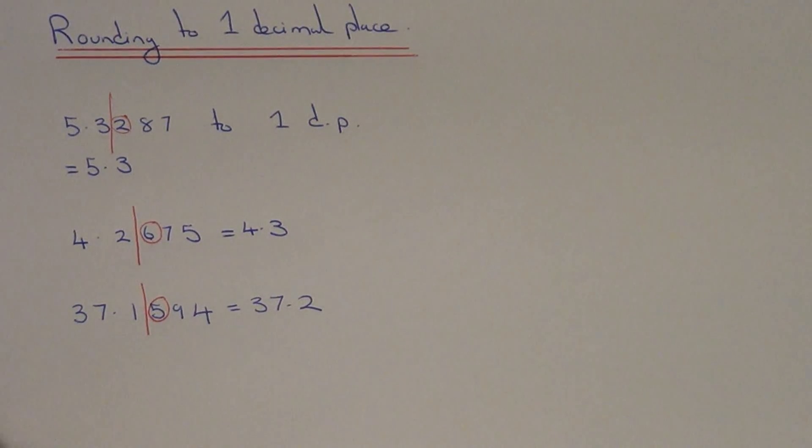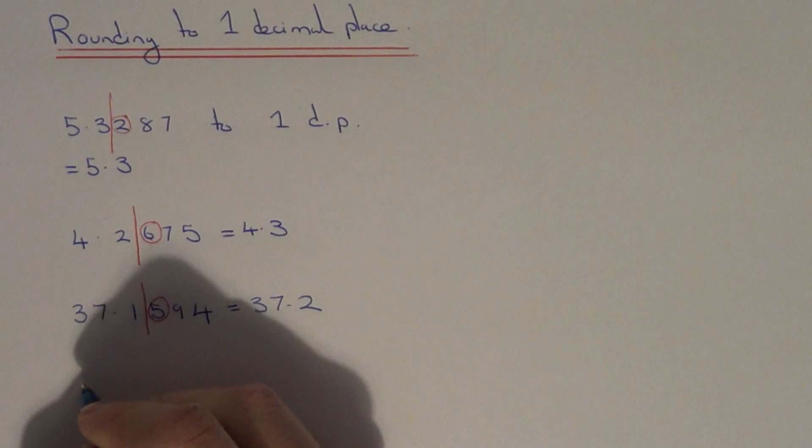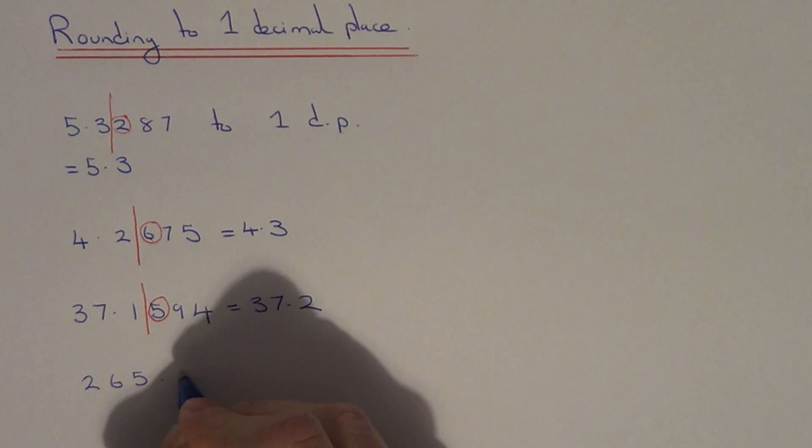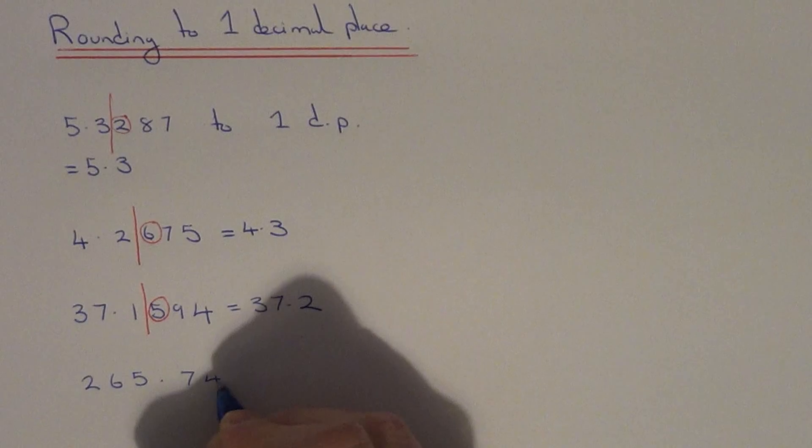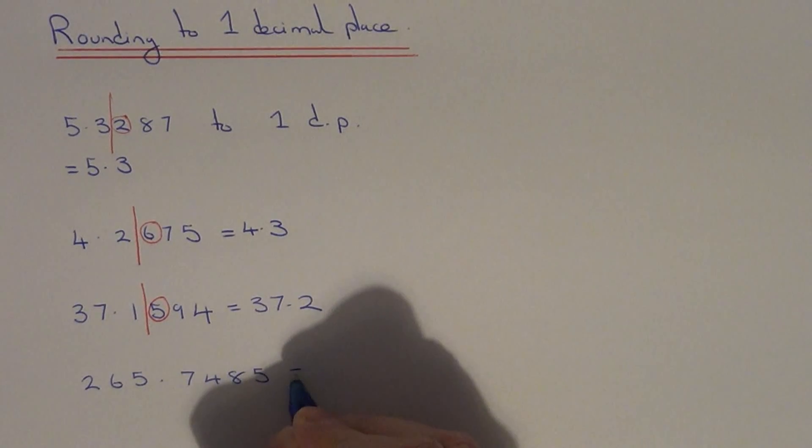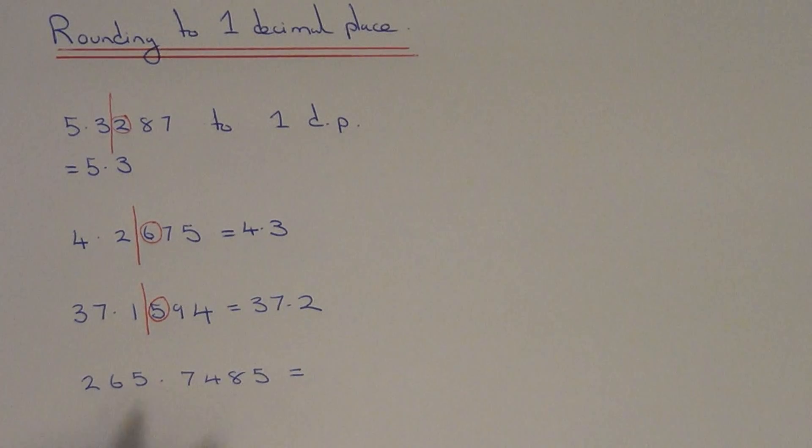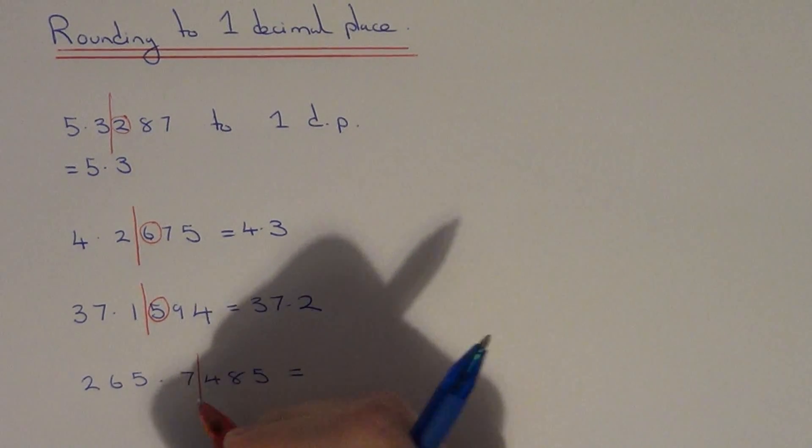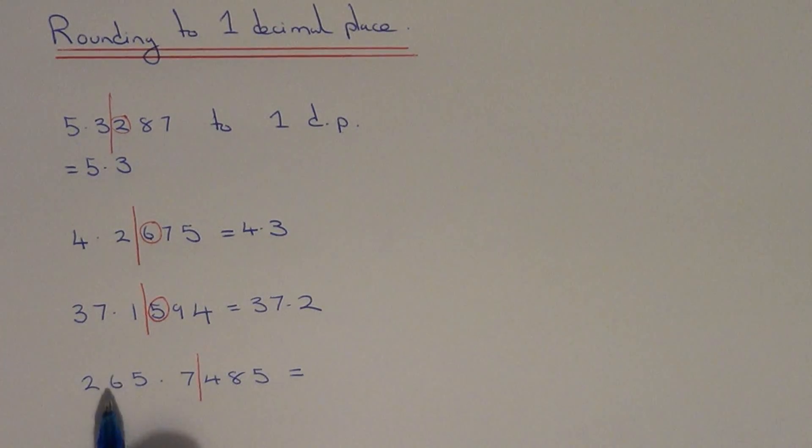Let's do one last example. This time let's go with 265.7485. Let's round it to 1 decimal place. This means we want one number after the decimal point. Our two options are 265.7 if we round it down (keep it the same), or 265.8 if we round it up.